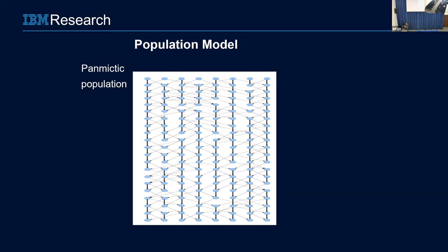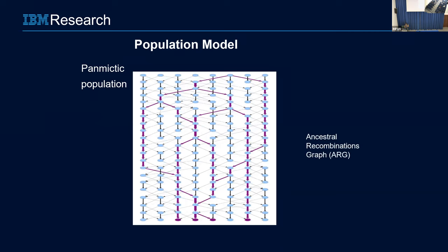This is a simplified model but it can be extended to a general model. This is called panmictic because each individual at a generation chooses parents randomly from the whole set. Now, if I look at only four individuals and track the history back, the structure that you see in purple is called the ancestral recombinations graph, or ARG. It's not a tree — because we have two parents and recombinations happen — so the structure you get is not fully resolved. I'll be talking about this ARG; I wanted you to understand what it is and where it comes from.